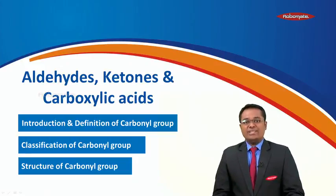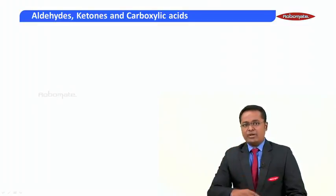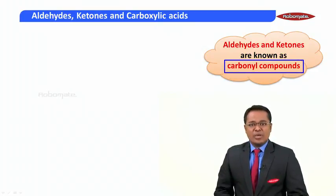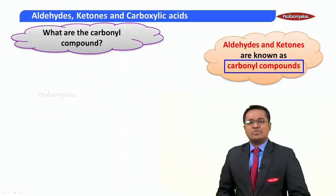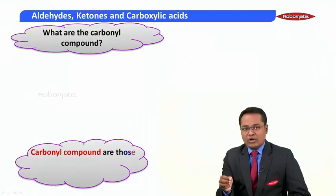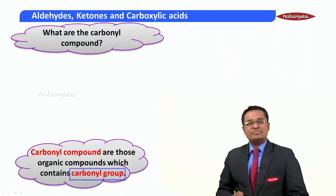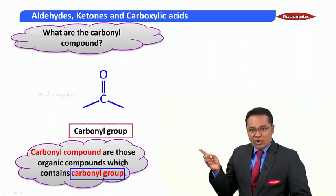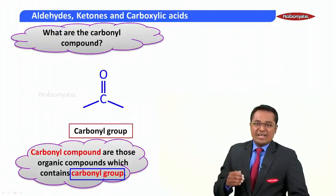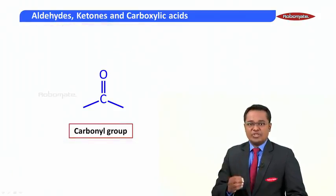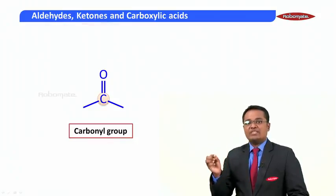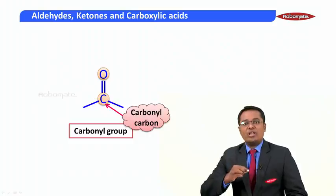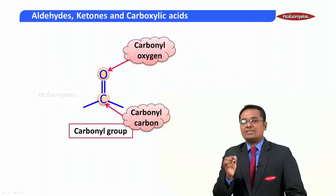Here we go with the first point, that is our introduction. Aldehydes and ketones are known as carbonyl compounds. Carbonyl compounds are those compounds which contain a carbonyl group. Now, the carbonyl group is shown on screen. The carbon atom of this group is sp2 hybridized. The carbon atom of this group is known as carbonyl carbon and the oxygen atom of this group is known as carbonyl oxygen.